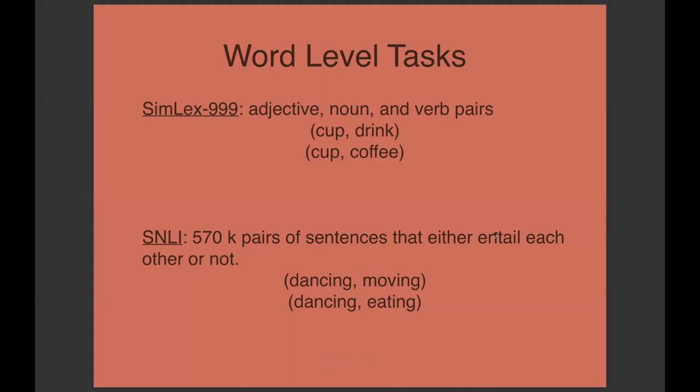SimLex-999: pairs of words like cup-drink and cup-coffee that are related to each other. If you build vectors for them, the cosine of the distance between them strongly correlates with how people think they are semantically related. This has been a success in many tasks like parsing, summarization, and translation.